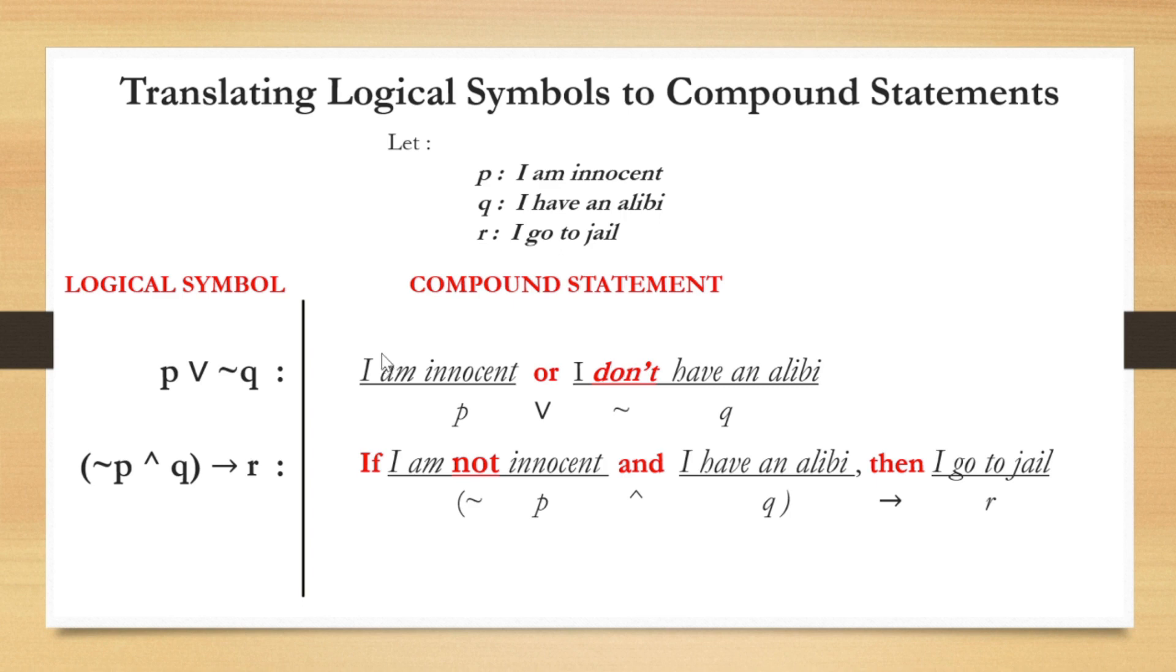The third logical symbol is negation R equivalent to P and negation Q. I will not be in jail if and only if I am innocent and I don't have an alibi.